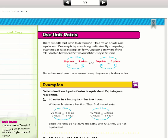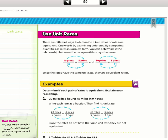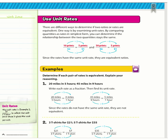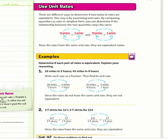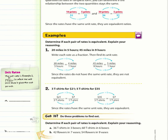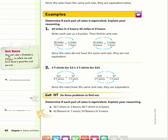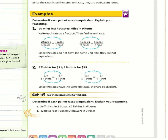There are different ways to determine if two ratios or rates are equivalent. One way is by examining unit rates. By comparing quantities as rates in simplest form, you can determine if the relationship between the two quantities stays the same. This is the method I really like — using unit rates to find out if they are the same. Example 1: determine if each pair of rates is equivalent and explain your reasoning.